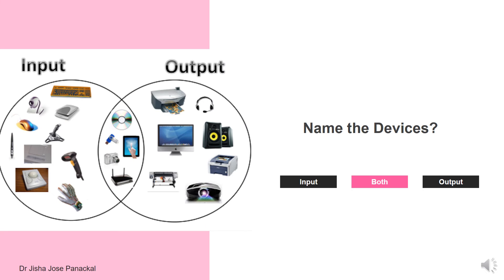This figure shows various types of devices, some of which may be familiar to you. As an assignment, try to name these devices and categorize them into input devices, output devices, and devices that can be used for both purposes. Don't worry if you are not getting the name of a particular device — we will discuss each and every one in detail.